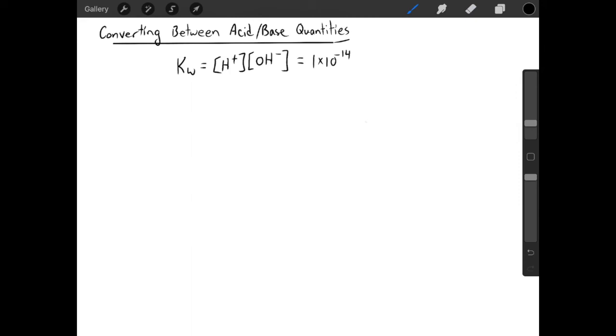So what we can do is take the negative log of both sides of this autoionization equilibrium. If you do that, you'll end up with this expression. And again, remember, at 25 degrees Celsius, Kw is 1 times 10 to the minus 14, so pKw is just ten.